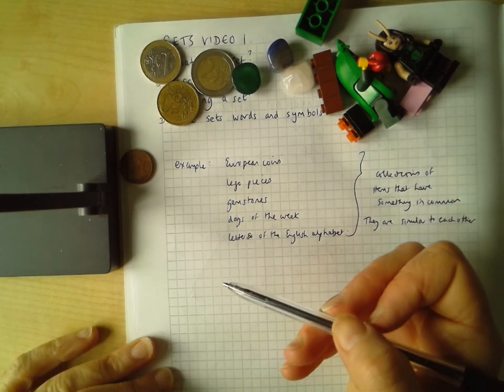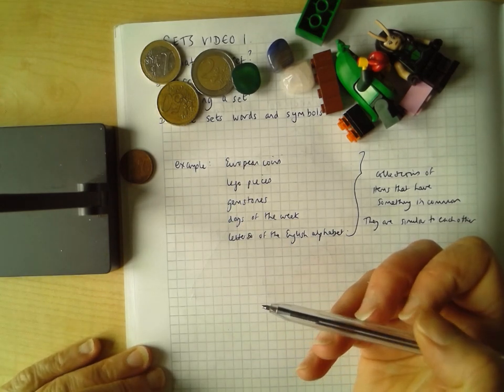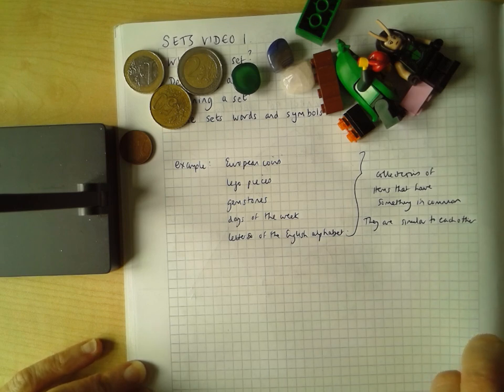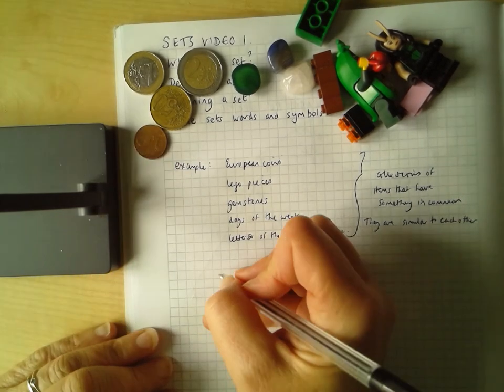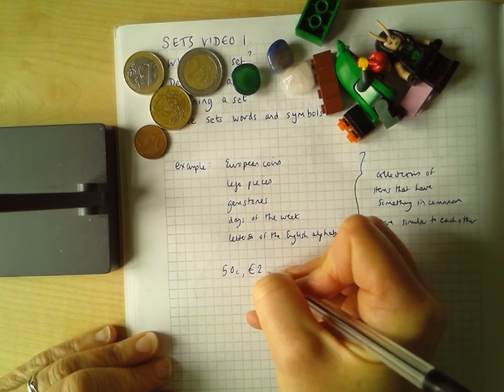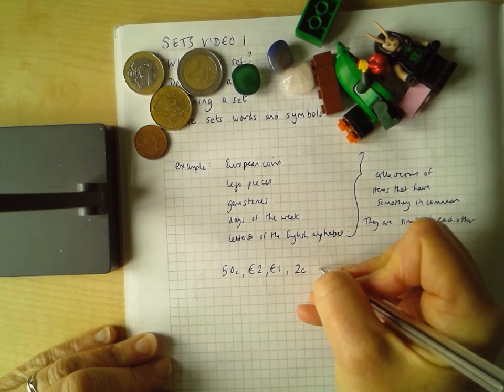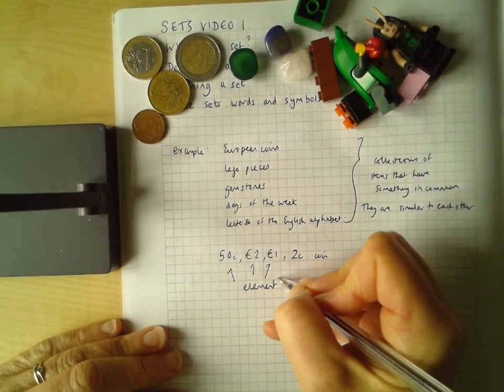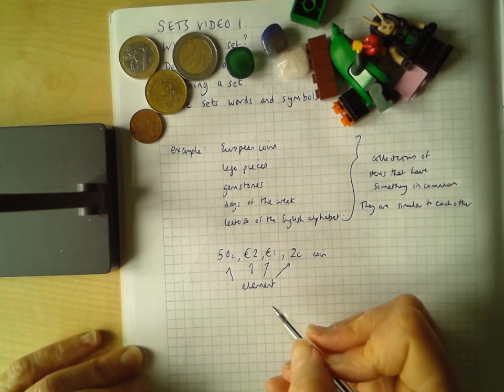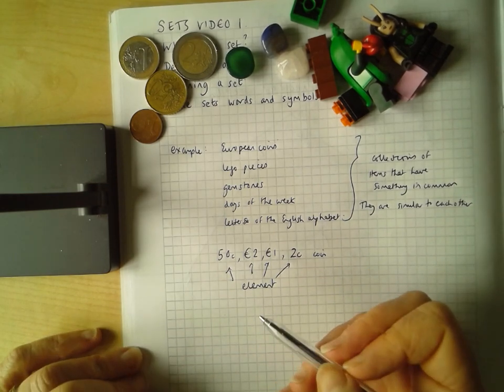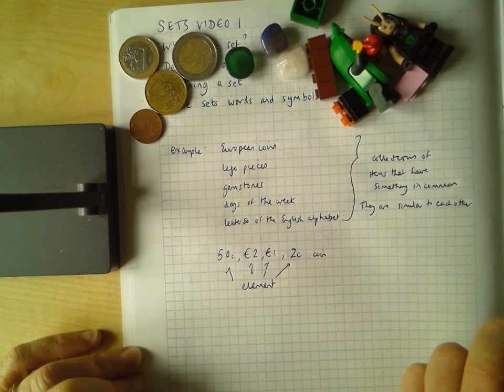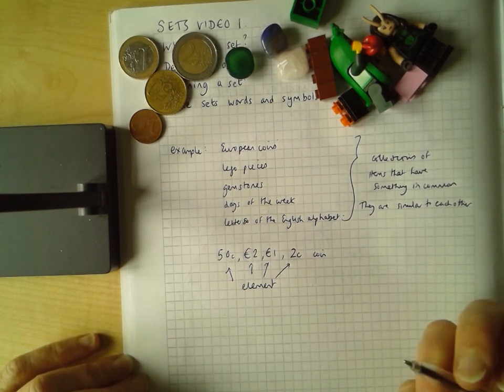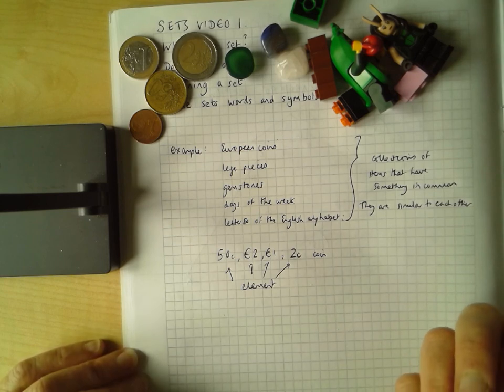We're describing them as European coins. Now we may need to be a bit more specific about that. And we might say when we're talking about European coins, that it's a euro, a 50 cent, a two euro and a two cent. So we had a 50 cent coin. We had a two euro coin. We had a one euro coin and we had a two cent coin. Each of these is called an element of the set. So when you see the word element, it just means the items within the set. It's very important that it's clear what goes into that set. That's why we had to say European coins. If we just said coins, then it's possible we could have had British sterling coins, or American cent coins, or coins from any other country around the world.